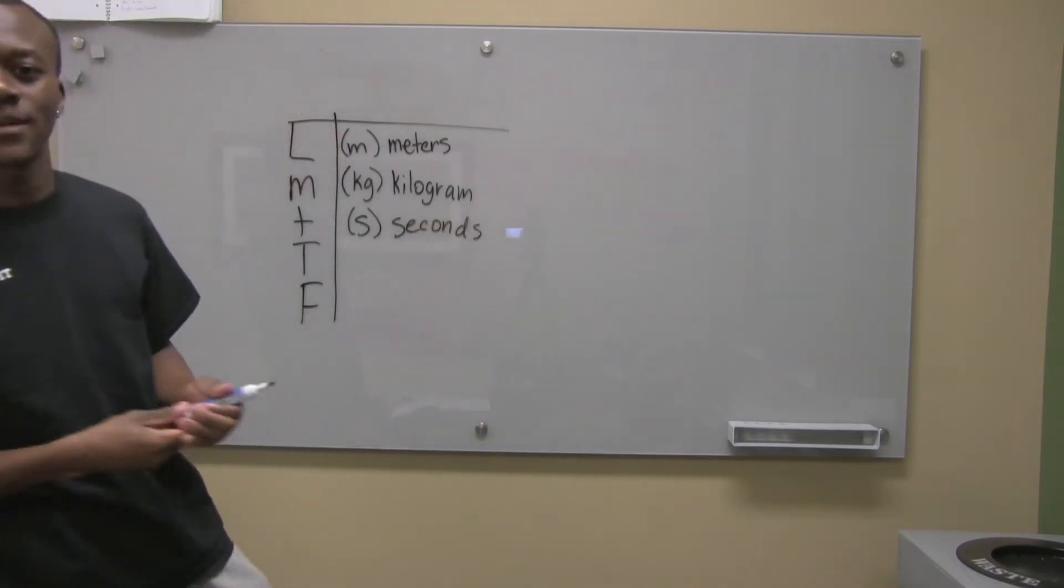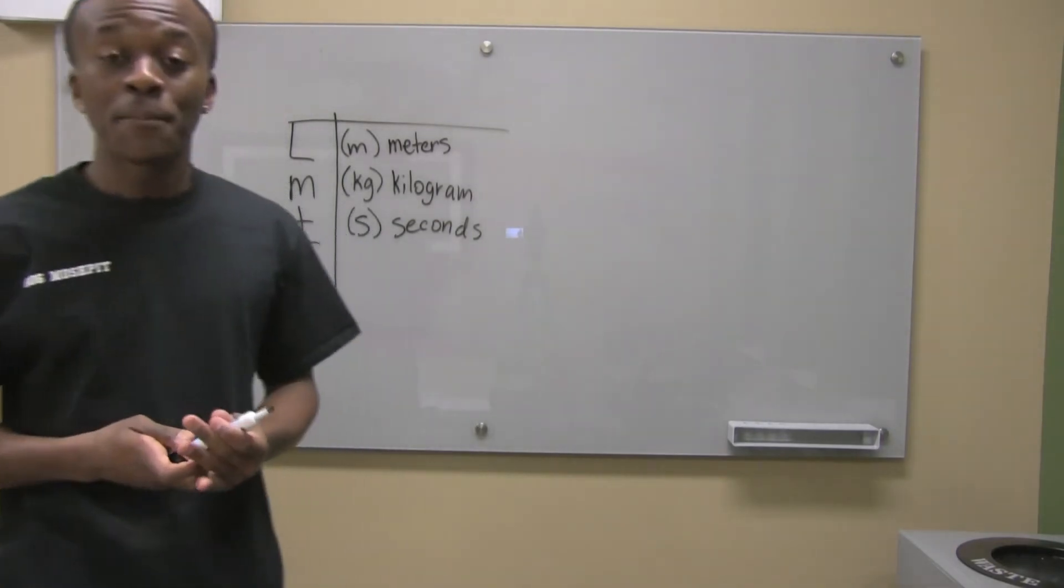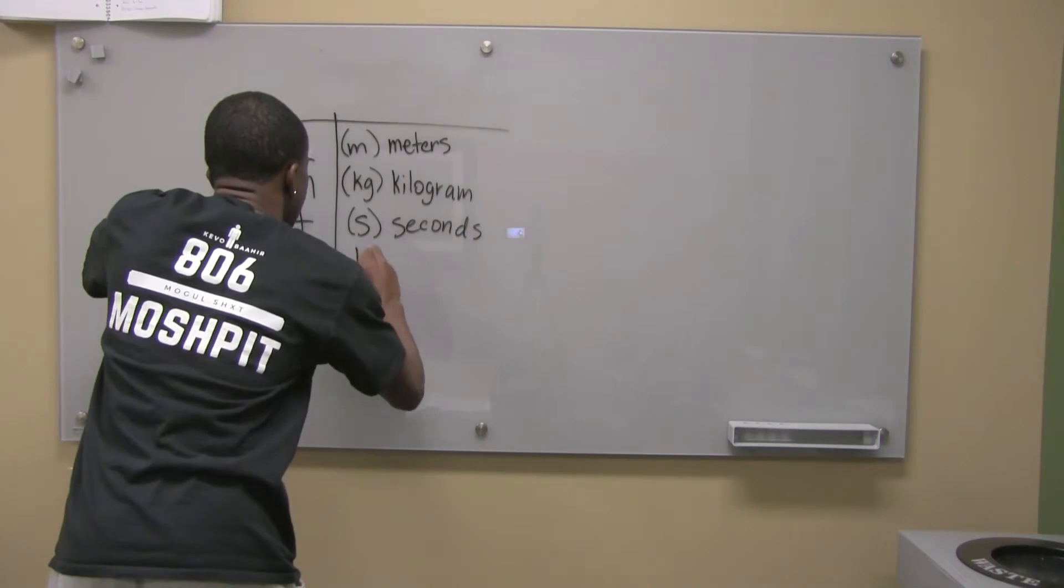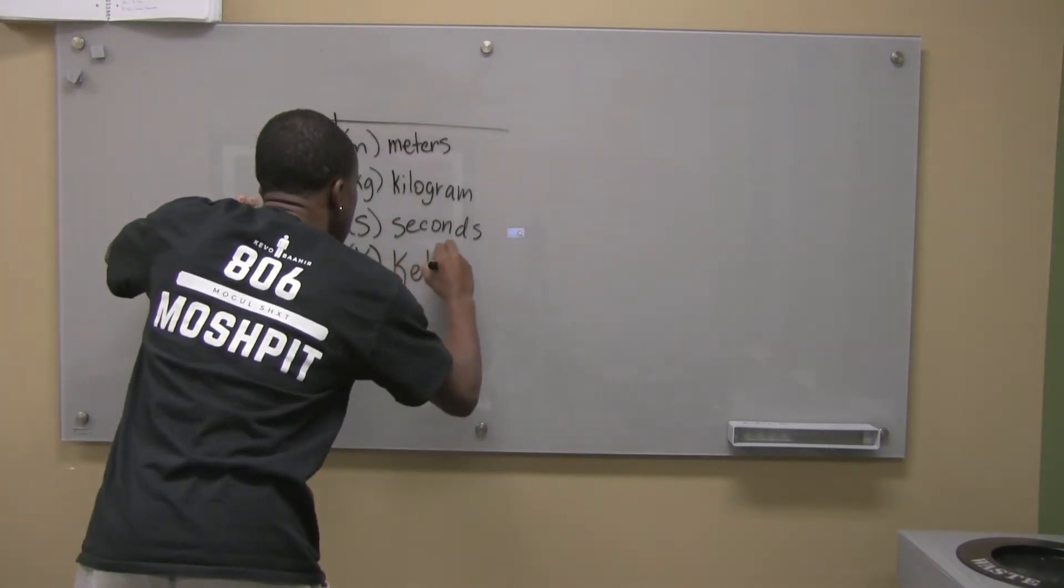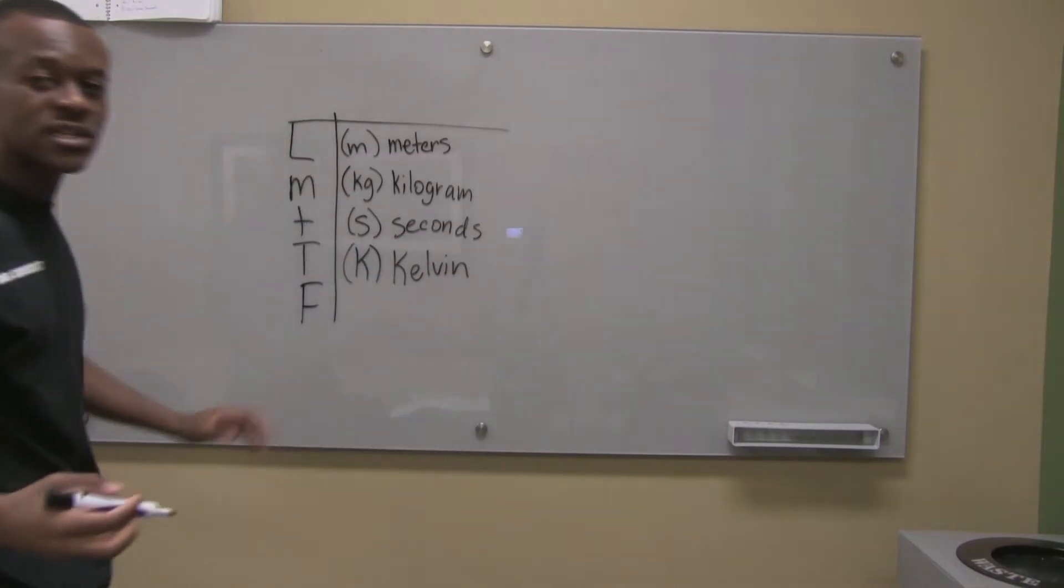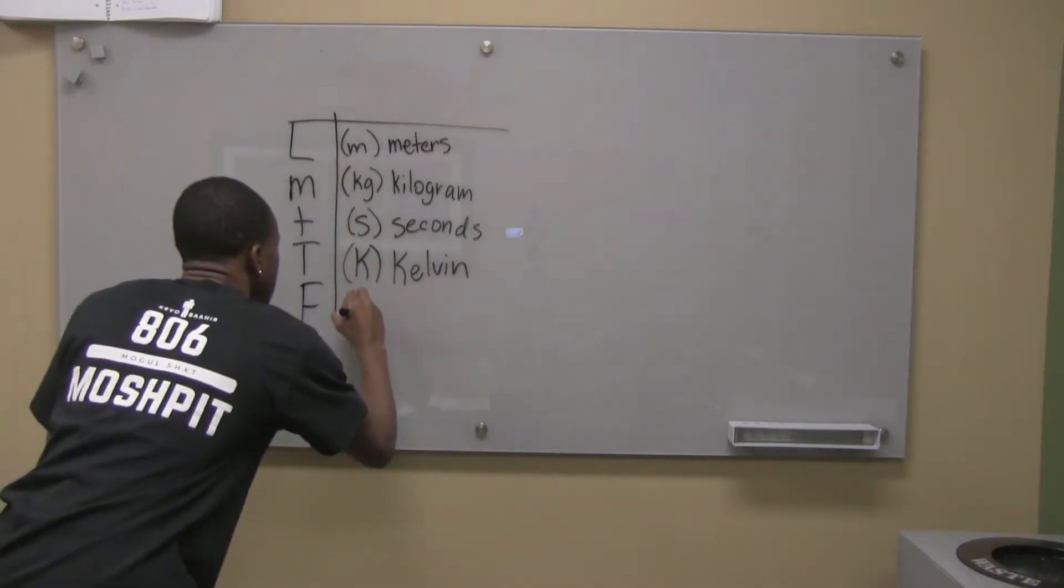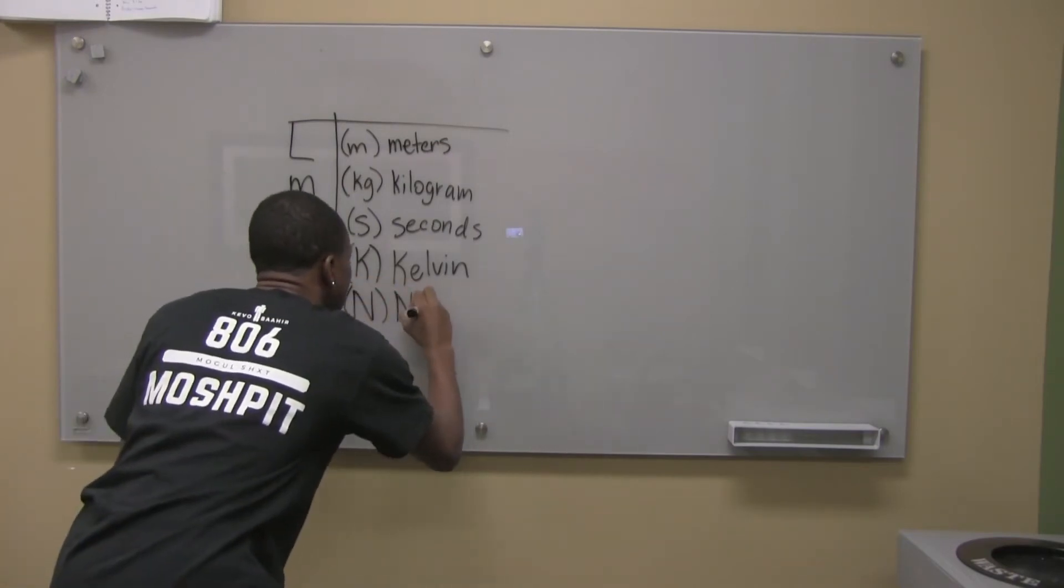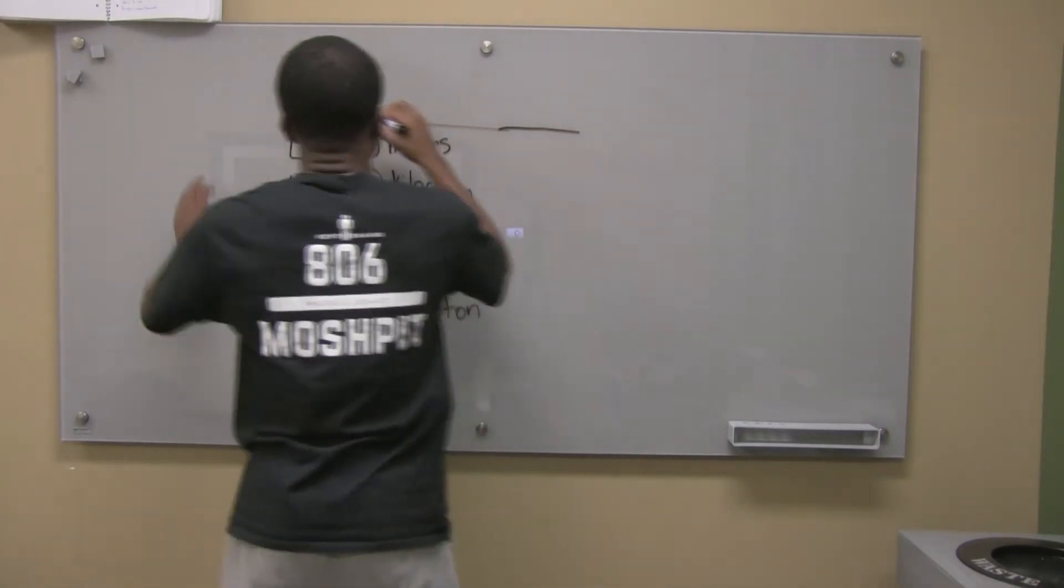Now, what do you think temperature is given in? I'm sure many of you would say Celsius, but actually, it's something called Kelvin. And we denote that with a K. Force is given in Newtons. Newton was another famous scientist like Kelvin. So this is SI.